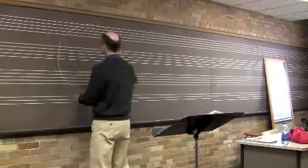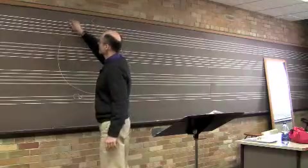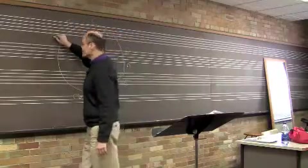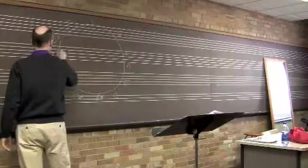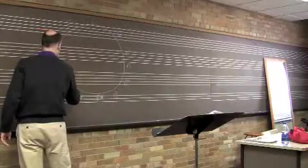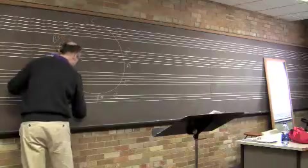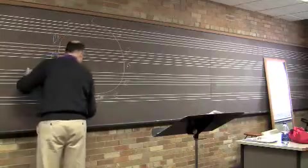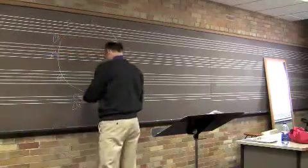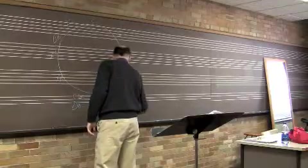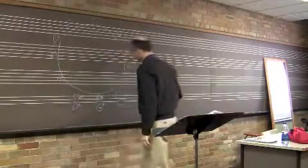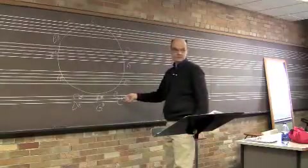So we get the sharp side done, then we come around and do the flat side. F at 11 o'clock, B flat at 10 o'clock, E flat at 9 o'clock, A flat at 8 o'clock, and then D flat is right under C sharp. These are the enharmonic keys, G flat right next to F sharp, and C flat right next to B.